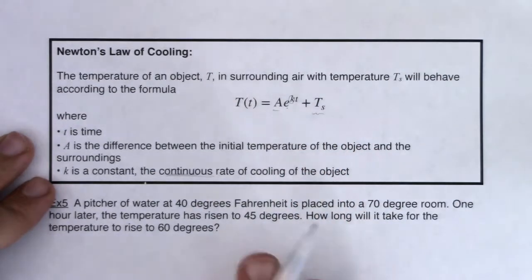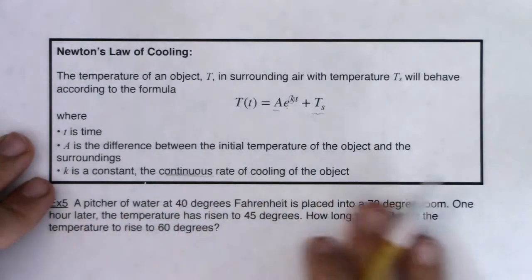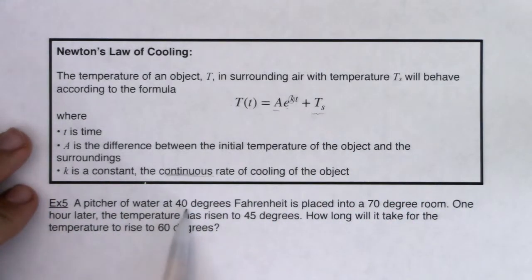So with that let's read through this problem and see what we can pick apart. So it says a pitcher of water at 40 degrees Fahrenheit is placed into a 70 degree room. One hour later the temperature has risen to 45 degrees. How long will it take for the temperature to rise to 60 degrees?